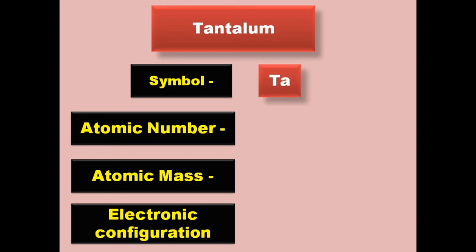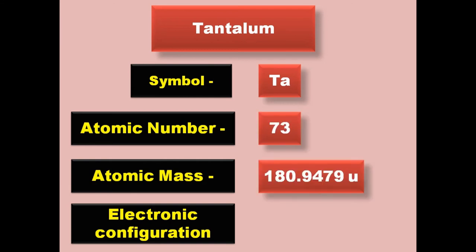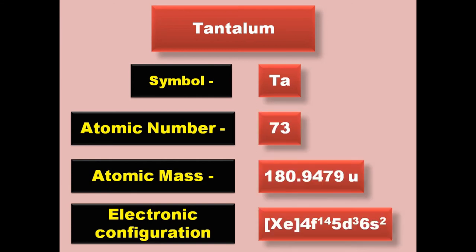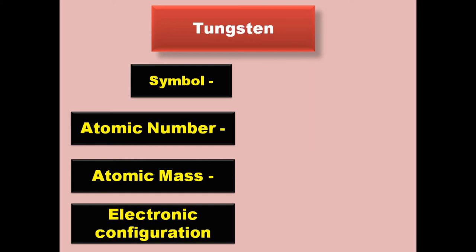Tantalum has symbol Ta, atomic number 73, atomic mass 180.9479, electronic configuration [Xe] 4f14 5d3 6s2. Tantalum is a transition metal and exists in solid form at room temperature.